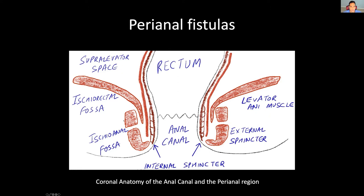Further out laterally, you can see the ischioanal fossa at the level of the anal canal and the ischiorectal fossa at the level of the rectum. And then above the levator ani is the supraelevator space. We will come back to this coronal anatomy, and I'll show you how different fistulae look using this same graphic.